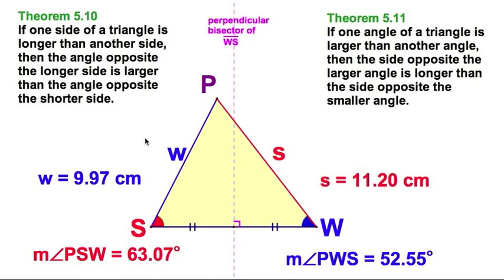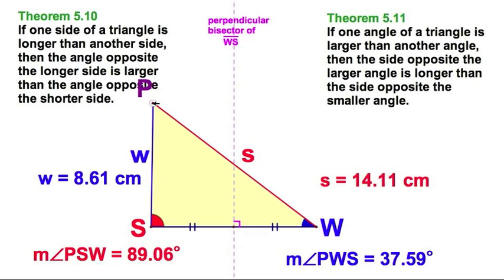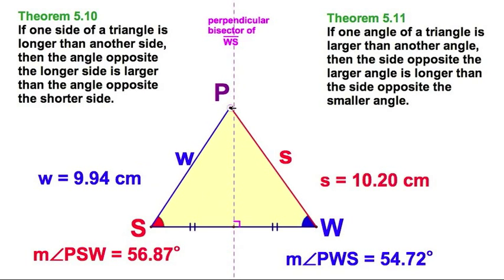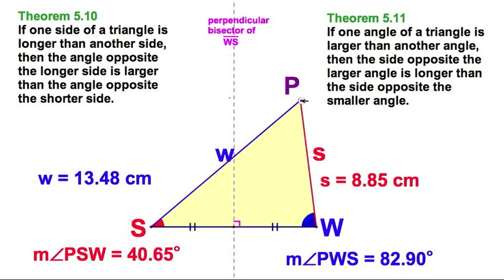Here's a pair of theorems we can explain with one picture. Look over here - the red side is bigger than the blue side, so the red angle is bigger than the blue angle. You can see that as the red side gets bigger, so does the red angle. As the blue side gets bigger, the blue angle gets bigger.